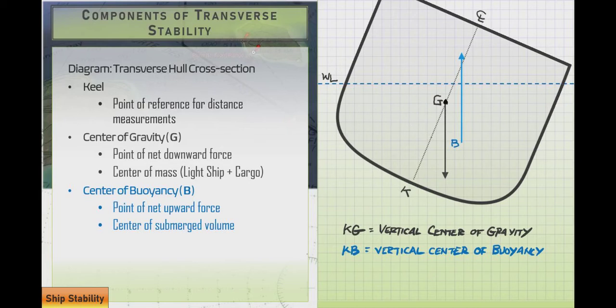But our center of buoyancy, B, is going to shift. Here's the original position. We'll call this B sub 1. It's going to shift over here. Why? Because the volume, the submerged volume, has changed due to the tipping of the ship. B is now in a different central location to that new volume that we've modified.